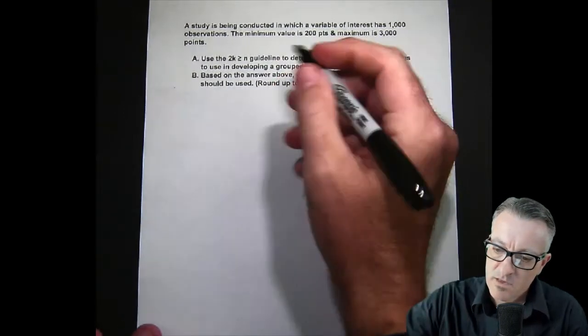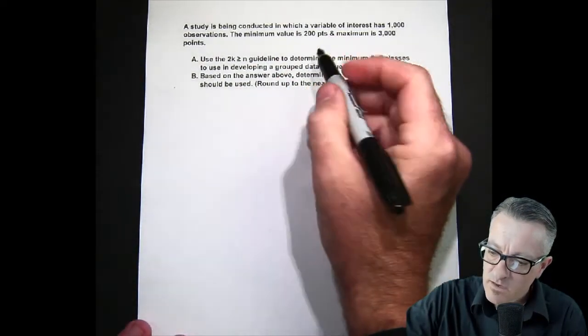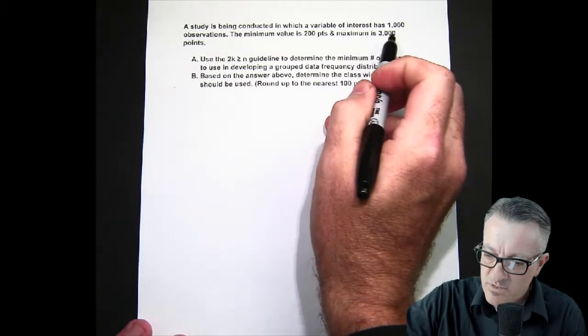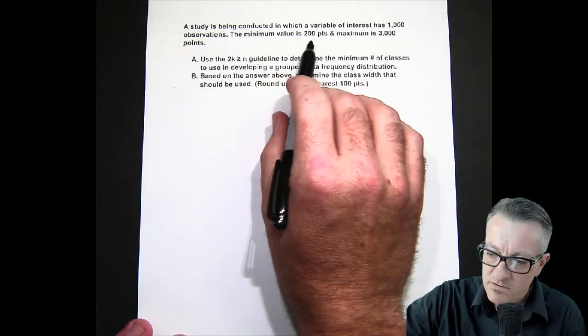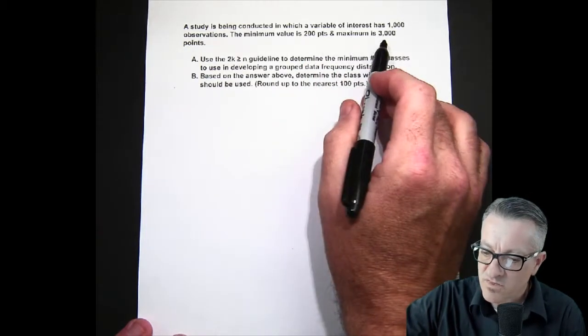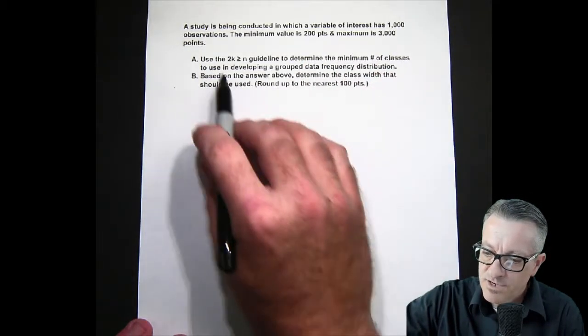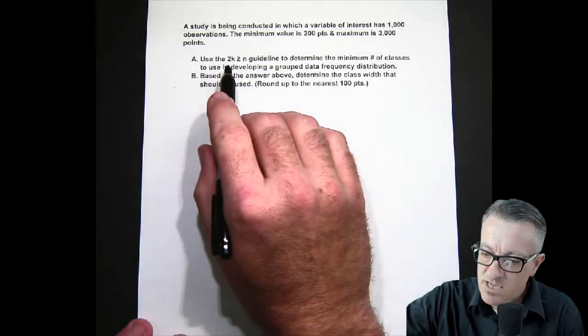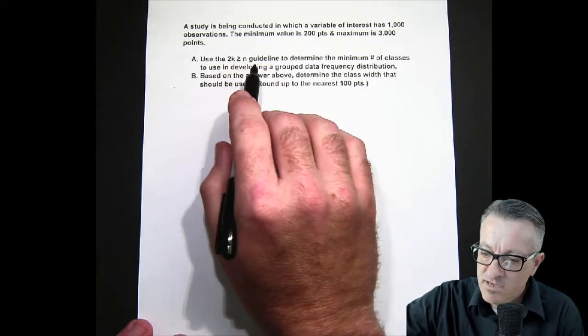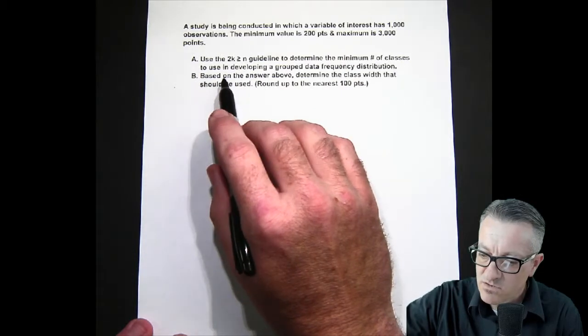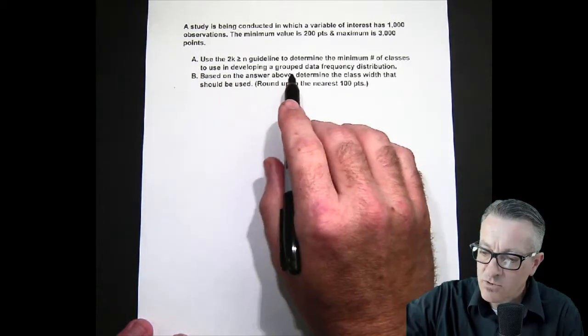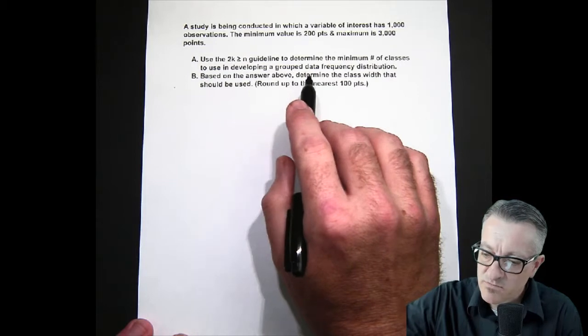A study is being conducted in which a variable of interest has 1,000 observations. The minimum value is 200 points and the maximum is 3,000 points. So our job is to use the 2^k greater than or equal to n guideline to determine the minimum number of classes to use in developing a grouped data frequency distribution.